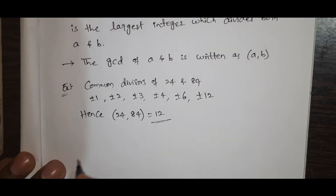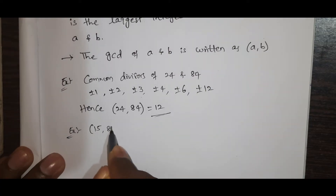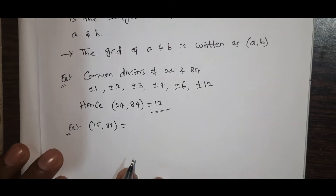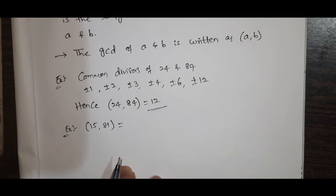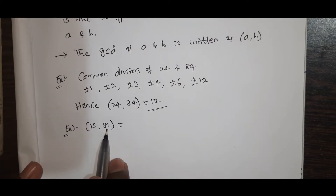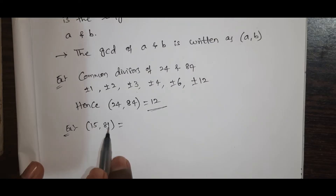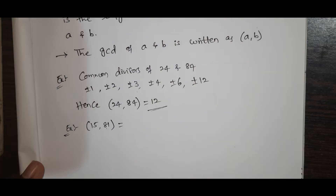Let's give another example. Let's take 15 and 81. In 15, we have 1 divisible and 3 divisible. In 81, we have 3 divisible. So we have 1 and 3 as common divisors. The greatest common divisor is 3. Are you clear?